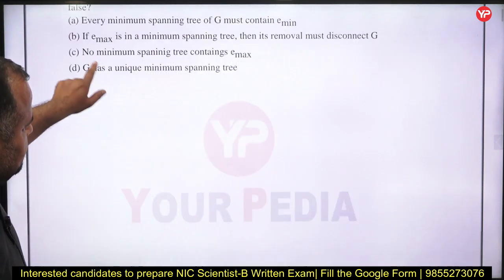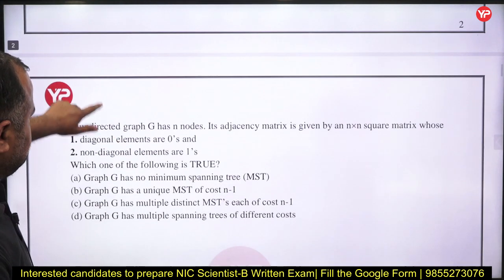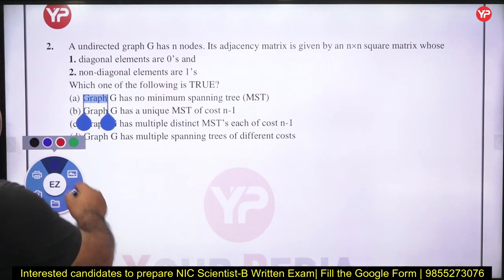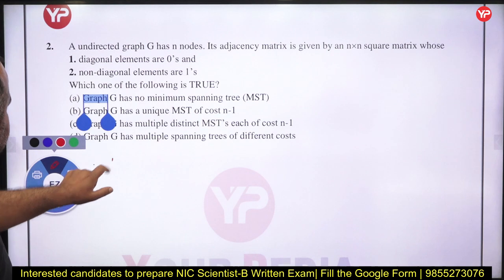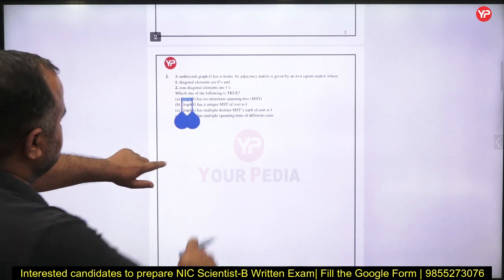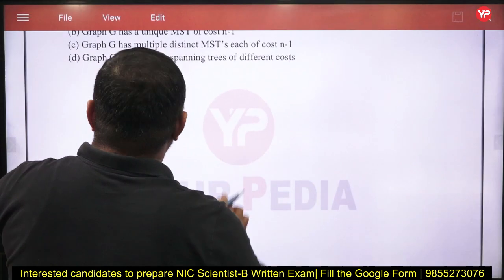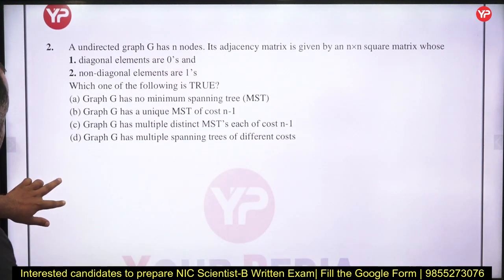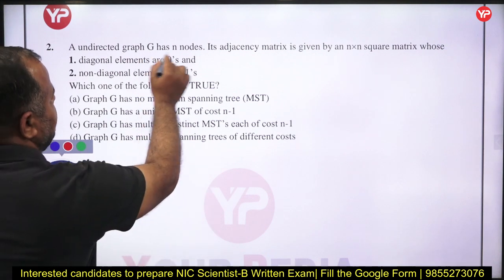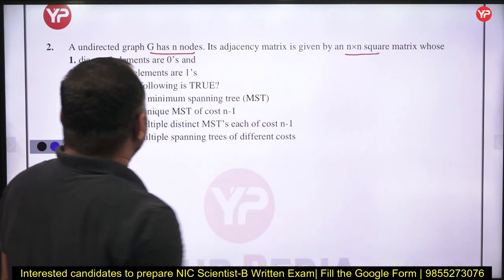Moving on to the next problem. Given is an undirected graph G with N nodes, and the adjacency matrix is an N×N square matrix.